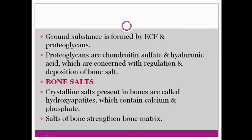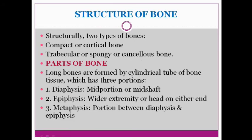Bone salts in bones are termed hydroxyapatites, which contain calcium and phosphate. Their function is to strengthen the structure. There are two types of bone: trabecular, spongy or cancellous bone, and compact bone. A long bone is a cylindrical tube which consists of three portions: diaphysis, epiphysis, and metaphysis.